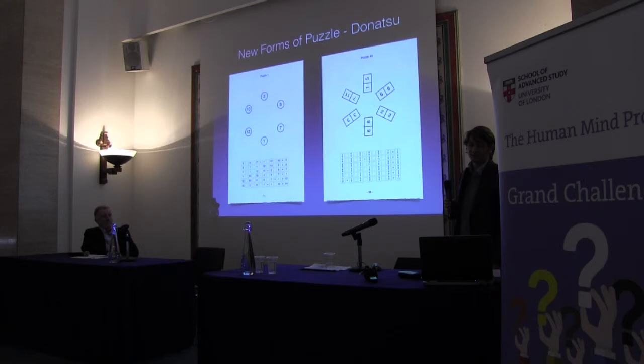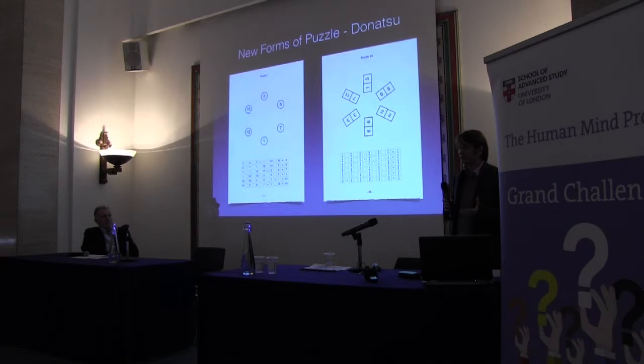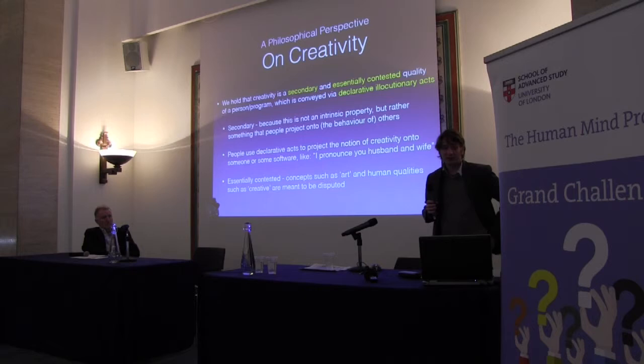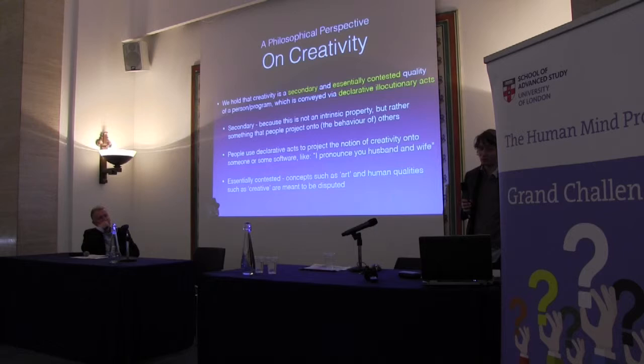This overview of being a jack of all these trades has given me an overview of creativity from a computational perspective, which makes me able to tentatively step into talking about human creativity — hence the title of the talk, Contested Creativity in Humanity. It's enabled me to have a philosophical perspective on creativity. We propose that the term creativity is a secondary and essentially contested quality of a person or a computer program, which is conveyed by declarative elocutionary acts.